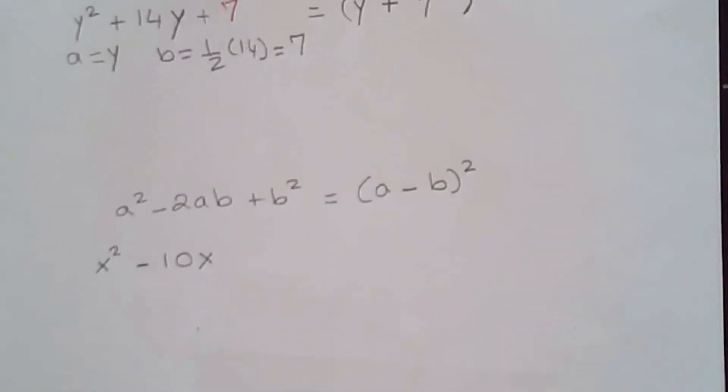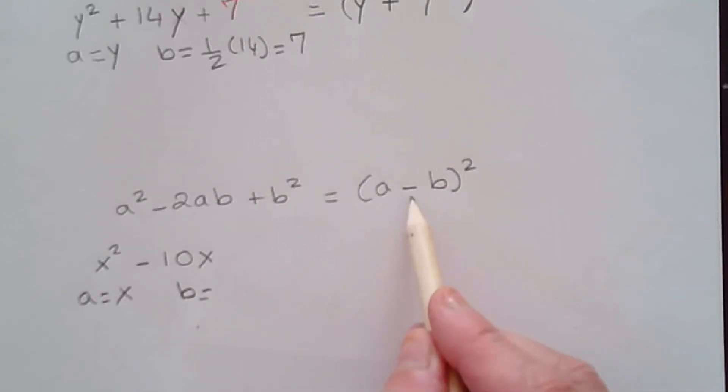So doing what we did here, a is the variable in here, so that's x. And b is half of the number itself. So half of 10, and that gives me 5.